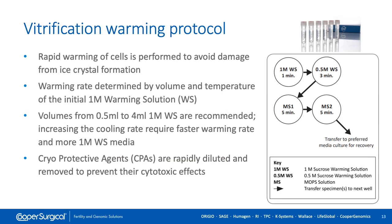The warming step is one of the most important in the vitrification program. Rapid warming is crucial to avoid ice recrystallization, which can be detrimental to embryo survival. The warming rate is determined by two parameters: volume and temperature of the first warming solution containing one molar extracellular cryoprotectant. The recommended volume differs between commercial kits, usually between 0.5 to 4 milliliters. During this step, intracellular cryoprotective agents are rapidly removed from cells. The next steps can be performed either at room temperature or at 37 degrees depending on the manufacturer. For example, the SAGE warming kit is designed to perform all steps at 37 degrees, simplifying the procedure.